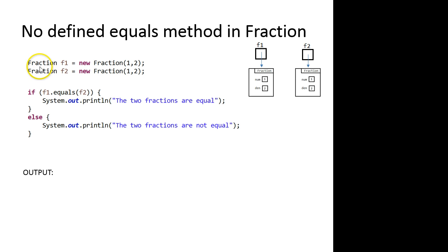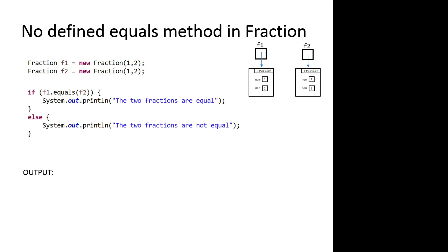Let's look at a coded example. Here we have two fraction objects defined with a picture, and an if statement where we're using the equals method — f1.equals(f2). There's no defined equals method in the fraction class yet. So if I run this, even though the numerator and denominator in both fractions are the same, this will output 'the two fractions are not equal.'